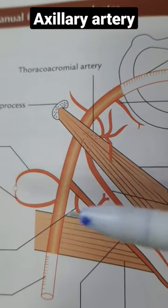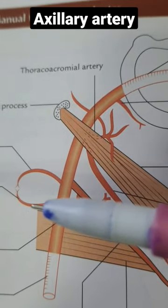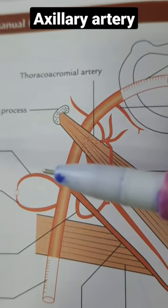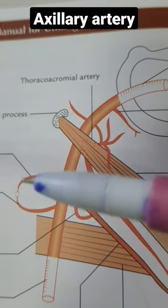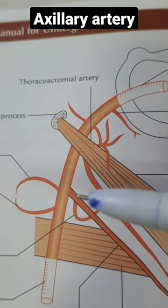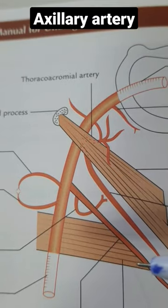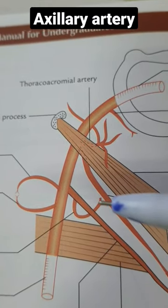The third part gives three branches: the anterior circumflex and posterior circumflex humeral arteries, which make an anastomosis around the surgical neck of the humerus, and the subscapular artery.